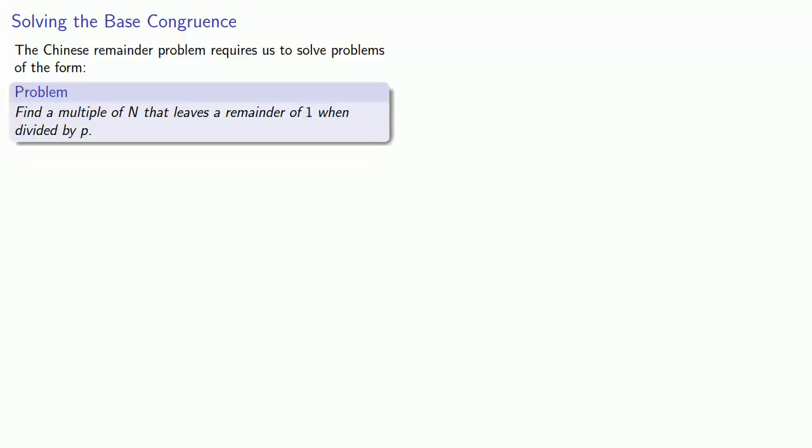The Chinese remainder problem requires us to solve problems of the form: find a multiple of n that leaves a remainder of 1 when divided by p. We've been solving this by checking out multiples of n, but can we solve these problems directly? And in fact we can. Qin Jiushao gives the following procedure, which we'll illustrate with the following example.